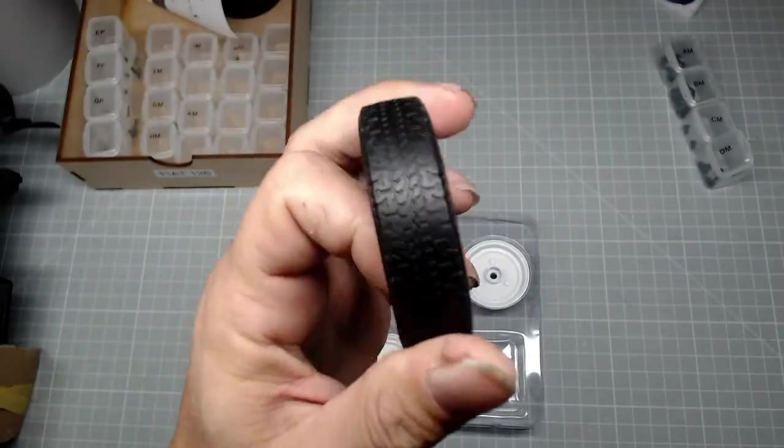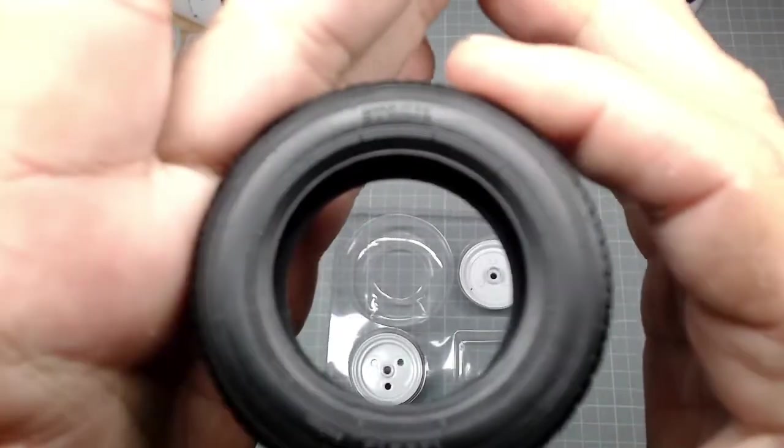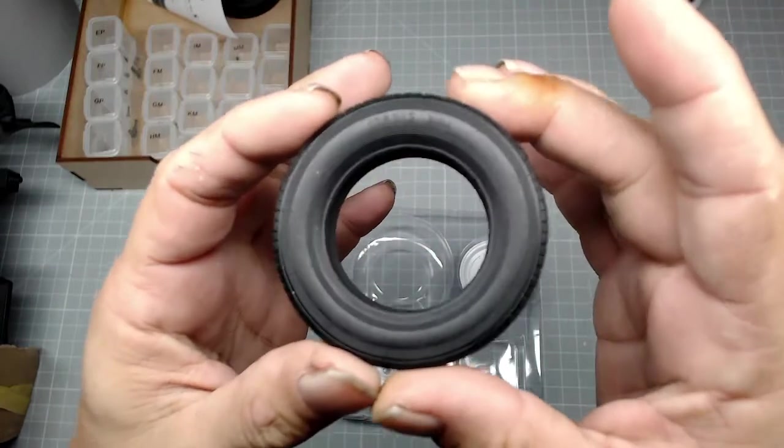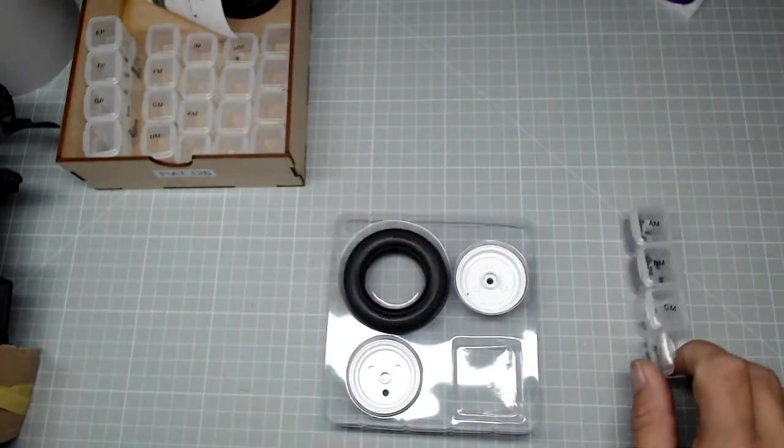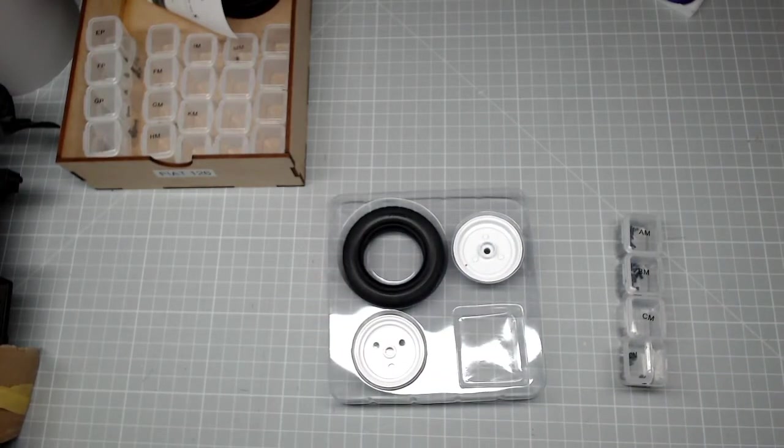And then lastly we have this beautiful tyre. I do love the tyres they give us. I can't seem to get the focus in there. And then we also have some DP screws, these are washer screws, and a nice simple stage this week.